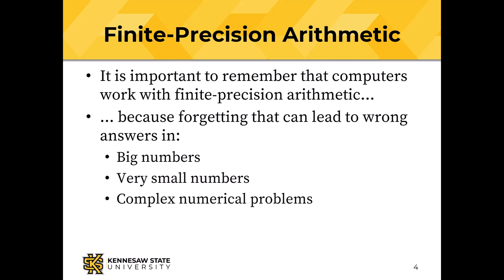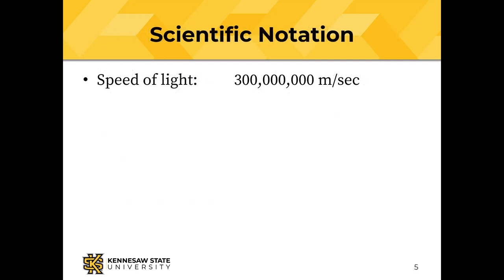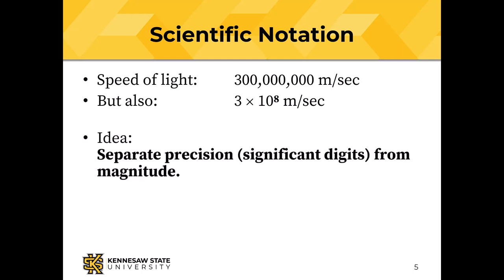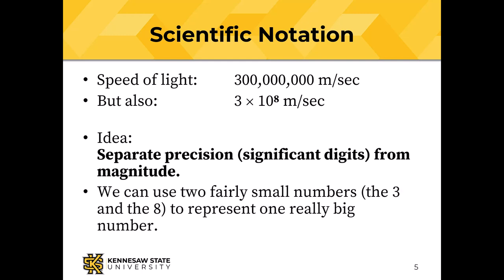Let's review something we learned in high school: scientific notation. The speed of light is about 300 million meters per second, and we can represent that as a 3 followed by 8 zeros, but we can represent it much more compactly as 3 times 10 to the 8 meters per second. The idea of scientific notation, and also of floating point numbers, is to separate the precision — the significant digits of a number — from the magnitude. Using scientific notation and floating point, we can use two fairly small numbers to represent one really big number.